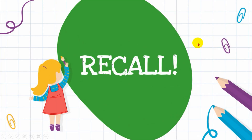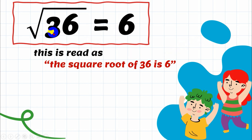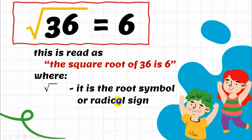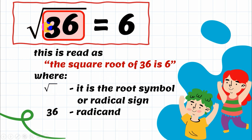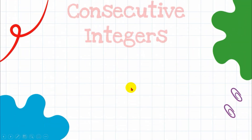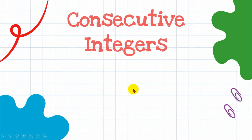As part of recall, the square root of 36 is 6. That symbol is your radical sign, or root symbol. The number inside the radical sign is your radicand, and the answer you're looking for is called the principal root. We need to understand the concept of consecutive integers.